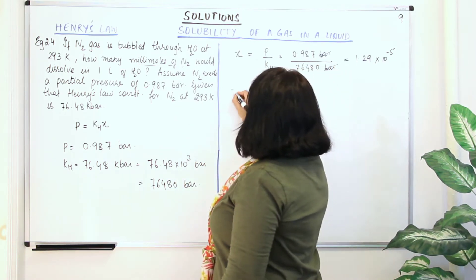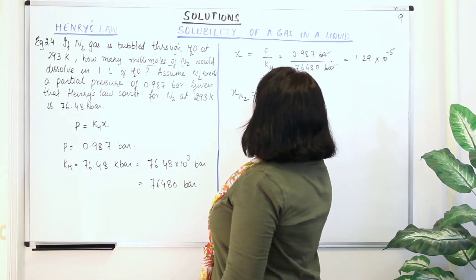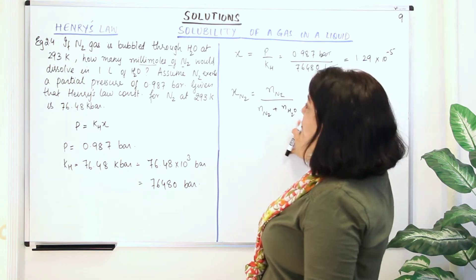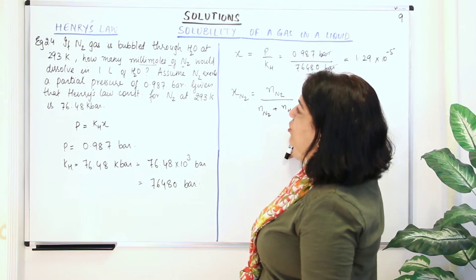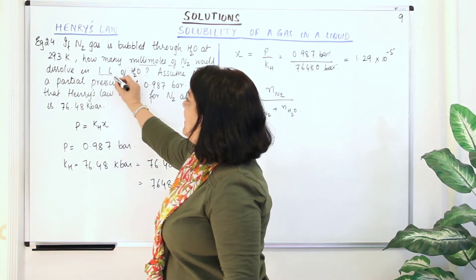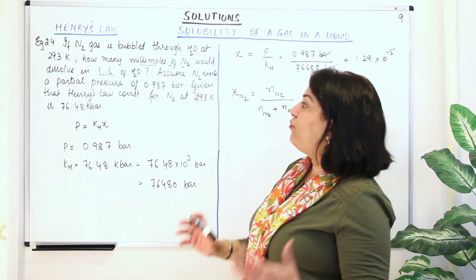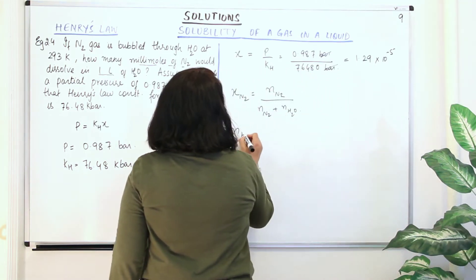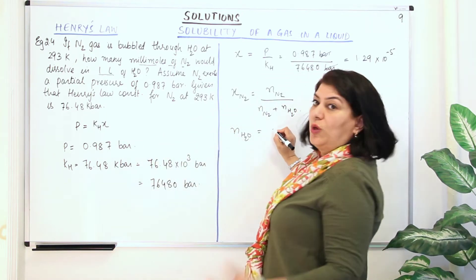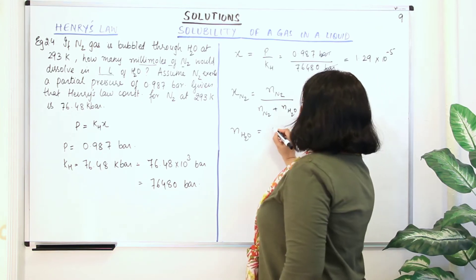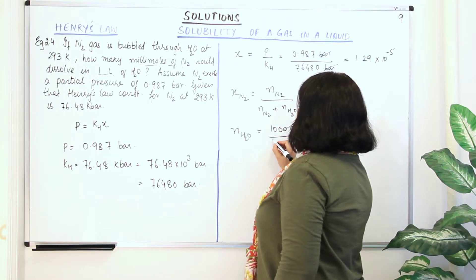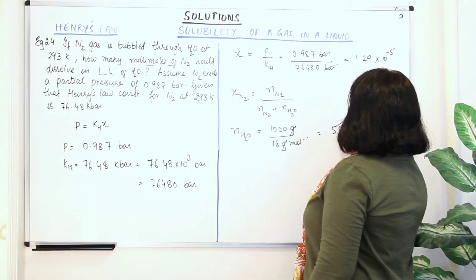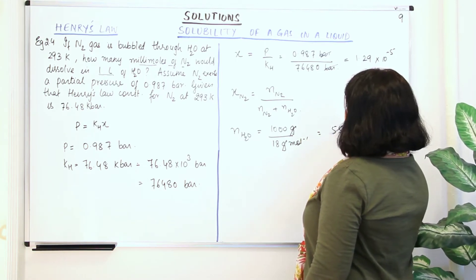Now we've calculated the mole fraction of nitrogen gas, which equals the number of moles of nitrogen divided by the number of moles of nitrogen plus number of moles of water. The number of moles of water: 1 litre is 1000 ml, and the mass of 1 ml of water is 1 gram, so the mass of 1 litre of water is 1000 grams. Number of moles of water = mass ÷ molar mass = 1000 grams ÷ 18 grams per mole = 55.5 moles.